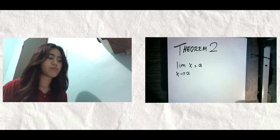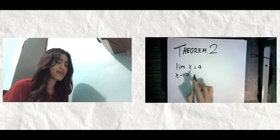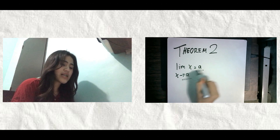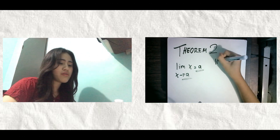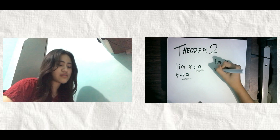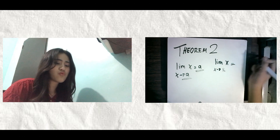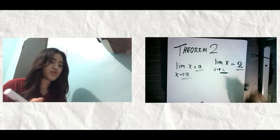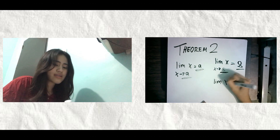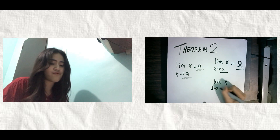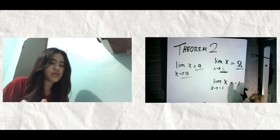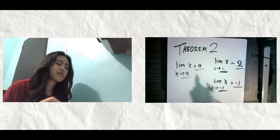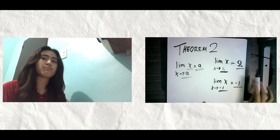In theorem 2, the limit of x as x approaches a is equal to a. What we do here is that our a is also our final answer. Example: limit of x as x approaches 8 is equal to 8, because our a is 8. Number 2: limit of x as x approaches negative 1 is equal to negative 1. That's how easy it is — when you see x, automatically apply theorem 2, and our a is our answer.